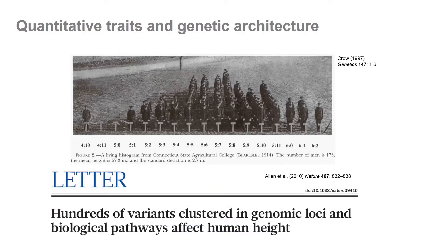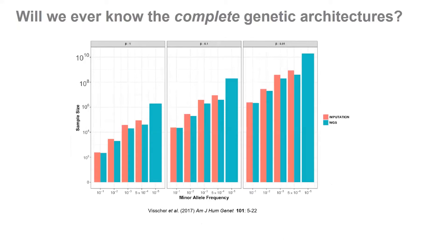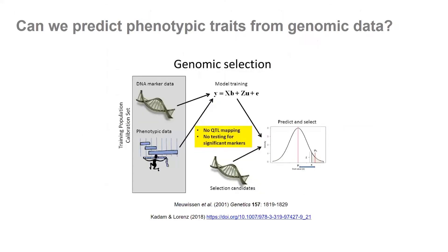We now know quite a few of the loci that affect human height. This was published about 10 years ago, and back then the number was in the hundreds. Now it's more in the thousands, possibly even tens of thousands of genes known to affect human height. Will we ever know the complete genetic architectures of traits? Probably not — it may not be possible until the human population has reached 10 billion and we are able to sequence all human beings on the planet.